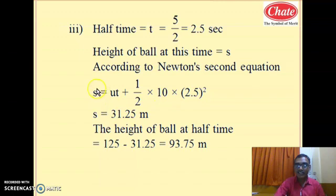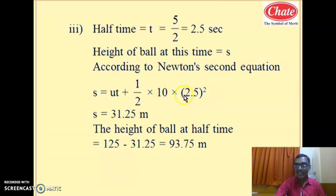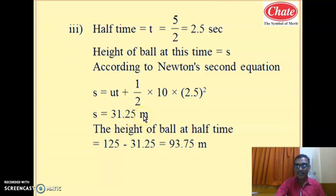We want the distance travelled in half the time. Since it is free fall, initial velocity u = 0, so the first term vanishes. The remaining calculation is: s = ½ × 10 × (2.5)² = 5 × 6.25 = 31.25 meters. The distance travelled by the ball from the highest point in half time is 31.25 meters. Hence the height of the ball at half time is 125 − 31.25 = 93.75 meters.